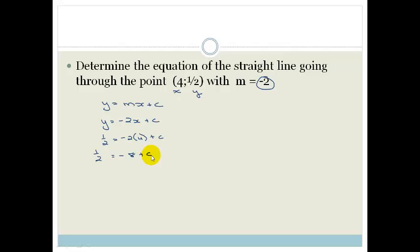So we've got a half equals minus 8 plus c. We take it across and we've got a half plus 8 equals c. Therefore you've got y equals minus 2x plus 8 and a half.